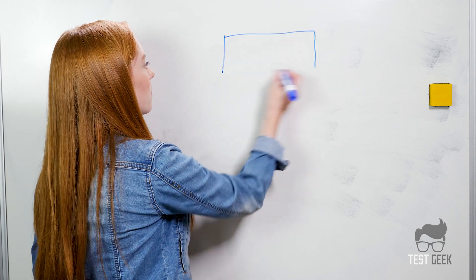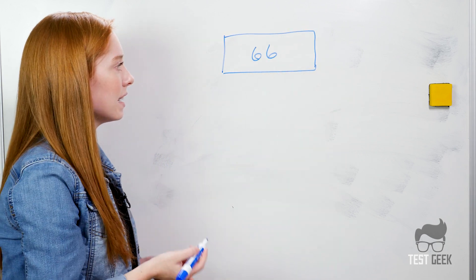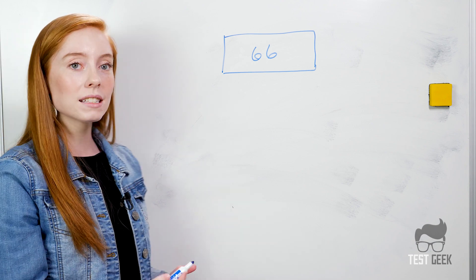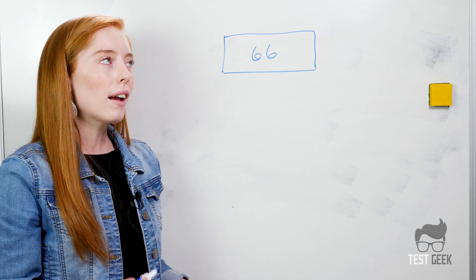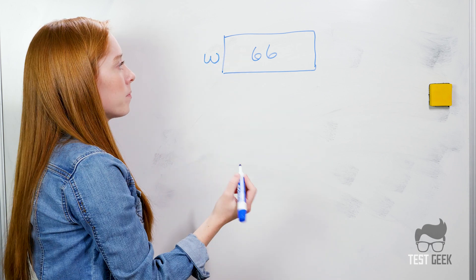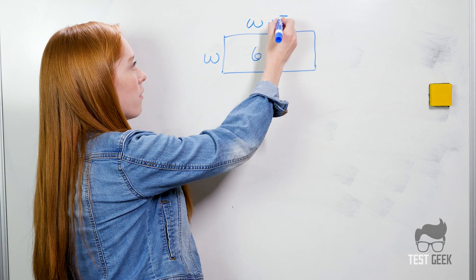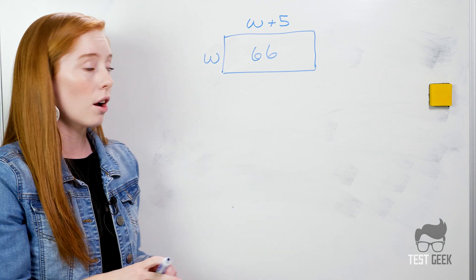You may also see word problems on the test that involve trinomials. We have one example that says Marcus is planning to put down a new flooring in his storage shed. If the length of the shed is 5 feet longer than the width and the area of the shed is 66 square feet, what is the width of the shed? The first thing I always do with problems like this is to draw a quick picture. Our area is 66 and it tells us that the length is 5 feet longer than the width. So I'm going to start by just saying this is our width and our length is the width plus 5. It's 5 feet longer than our width.